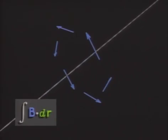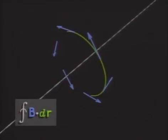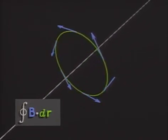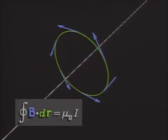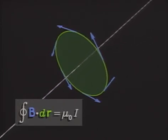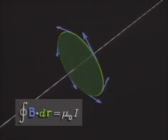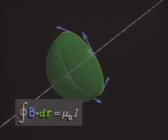The magnetic circulation around any path depends on the electric current linked through the path. The only way to be sure that the current goes through the path is to imagine a membrane bounded by the path. Then the same current must pass through the membrane, no matter what shape the membrane takes.